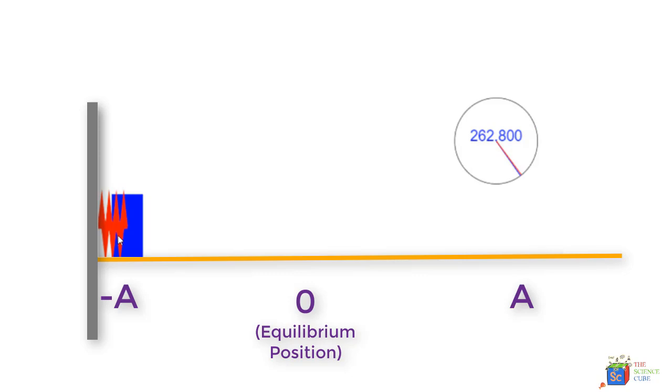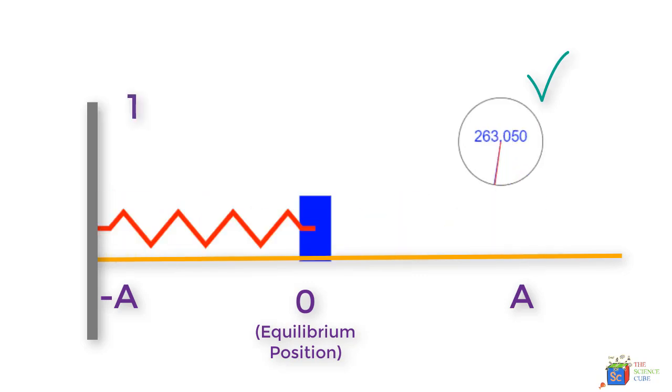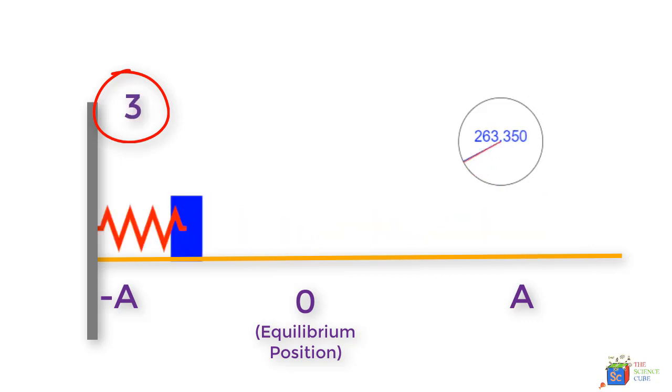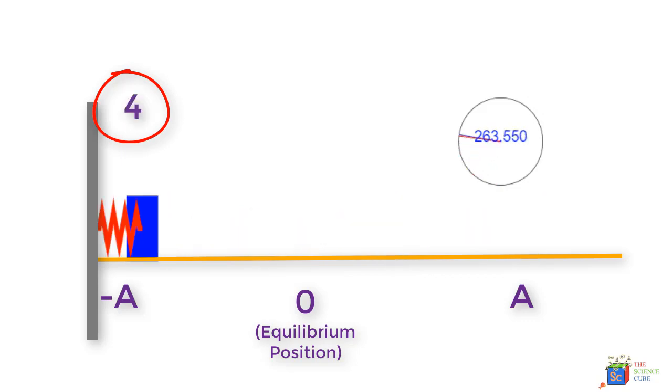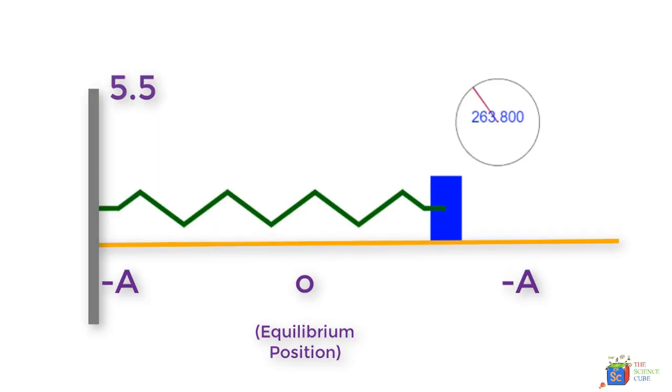You'll see at time T equal to 262.800 seconds we release the spring, and we will find how many vibrations happen in one second—that is, when the time elapsed is 262.800 (that's when it started) plus one second, or at 263.800 seconds. You will find that the mass has moved about 5.5 cycles in one second.